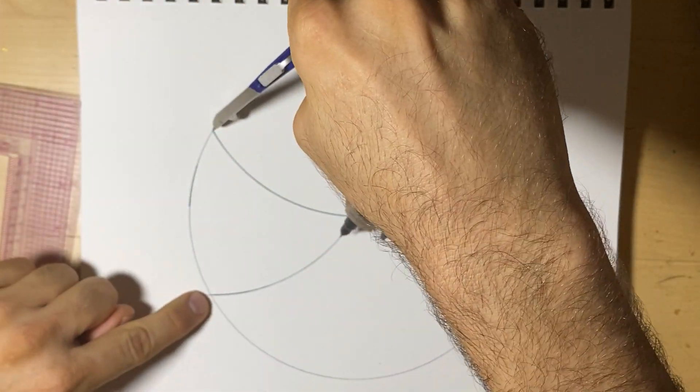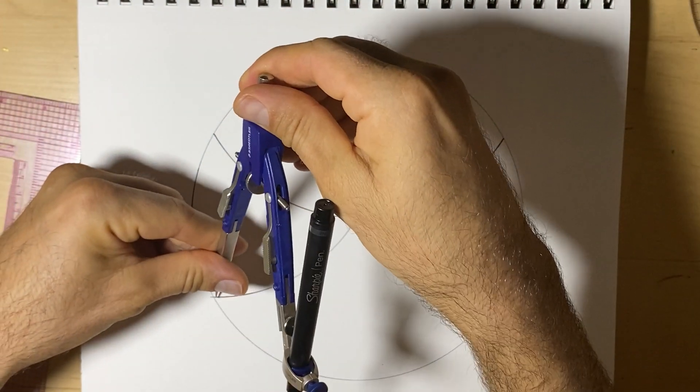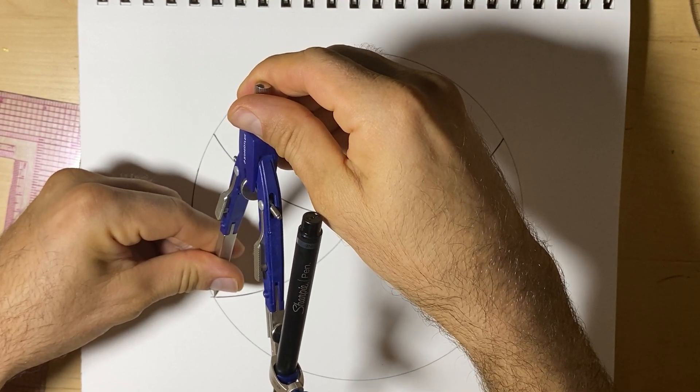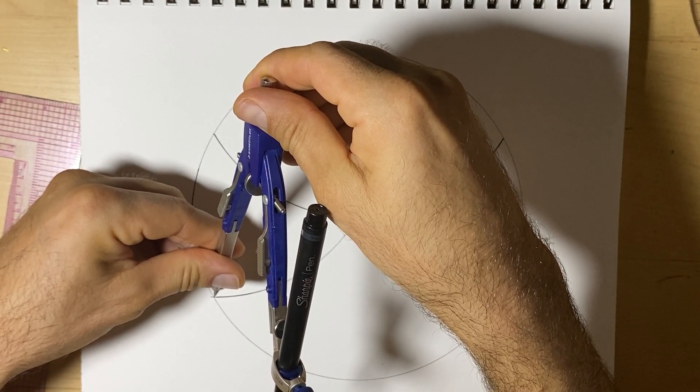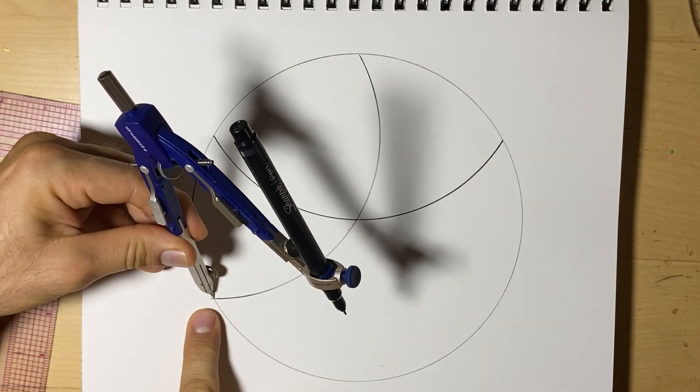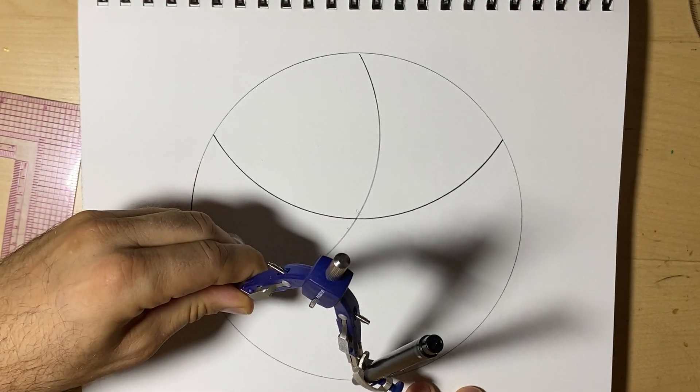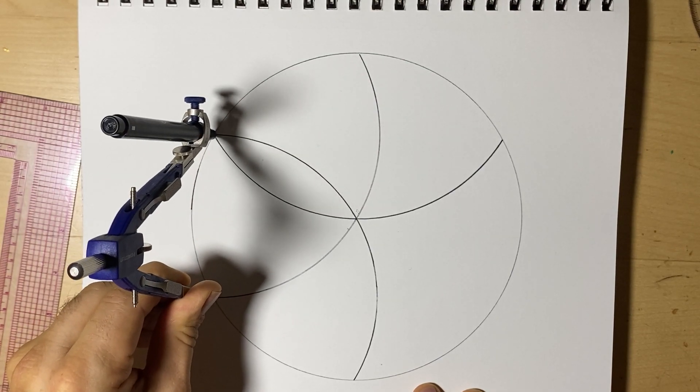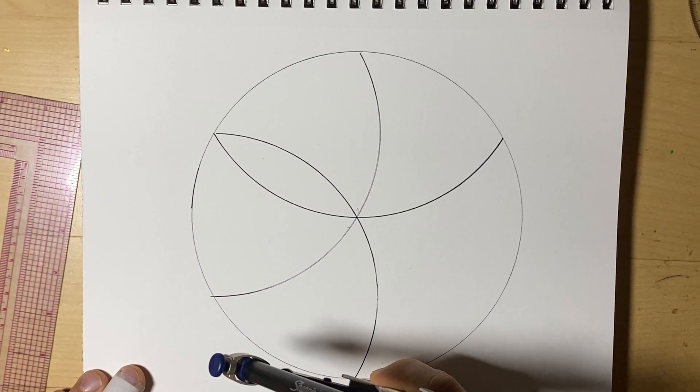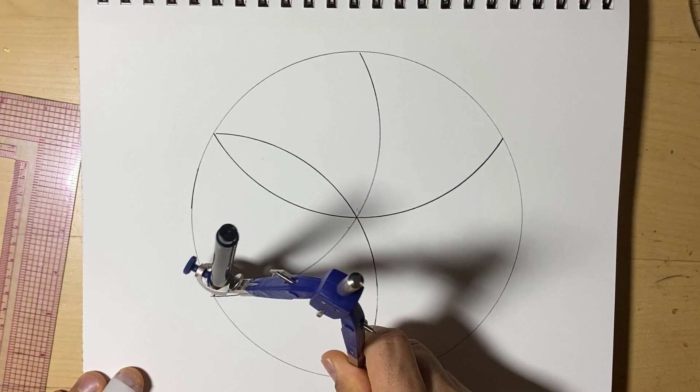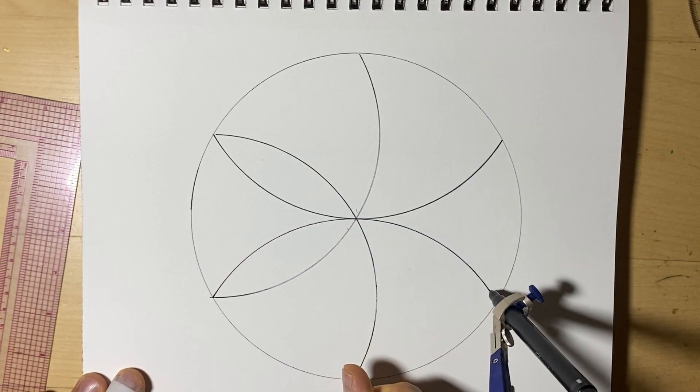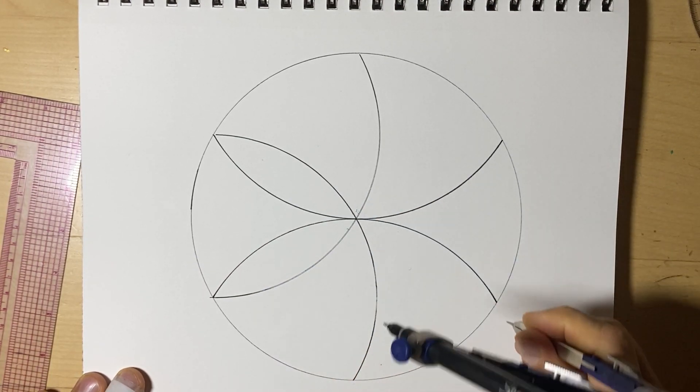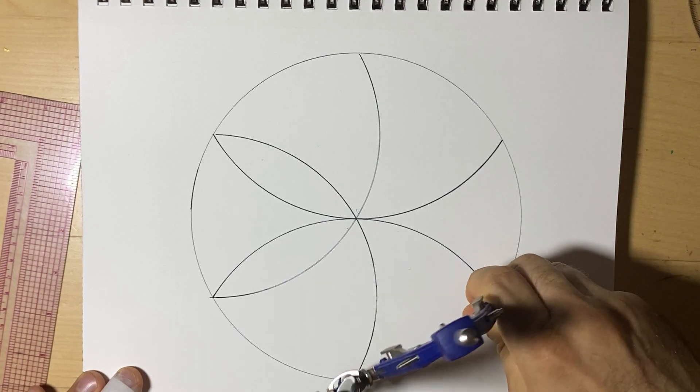And again, where it meets the circle, we're going to put our compass point there. And you want to be accurate. So you want to take your time to find exactly where the circle meets the arc. We call these pieces of a circle an arc. And as we go all the way around, it's going to make the inside of what we call the seed of life.